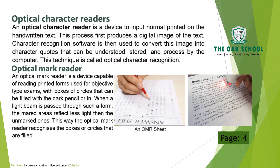Optical Mark Reader: an optical mark reader is a device capable of reading printed forms used for objective-type exams with boxes or circles that can be filled with a dark pencil or pen. When a light beam is passed through such a form, the marked areas reflect less light than the unmarked ones. This way the optical mark reader recognizes the boxes or circles that are filled.